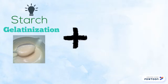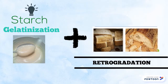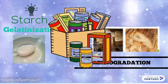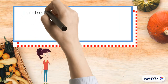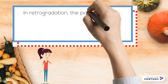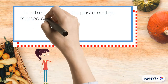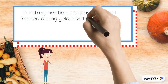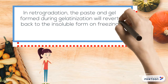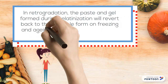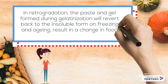Starch gelatinization is often accompanied by retrogradation upon storing and cooling. In retrogradation, the paste and gel formed during gelatinization will revert back to the insoluble form on freezing and aging, without a change in food texture.